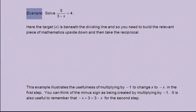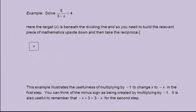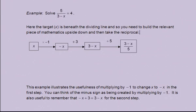Let's do a more complicated example. Let's solve 5/(3 - x) = 4. Here the target, x, is beneath the dividing line. And so you need to build the relevant piece of mathematics upside down, and then take the reciprocal. Let's start with x in a box. Then multiply by minus 1, to give minus x. Next add 3, to give 3 minus x. Next divide by 5, to give (3 - x)/5. Finally take the reciprocal, to give the required piece of maths of 5/(3 - x).